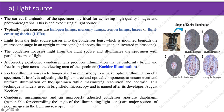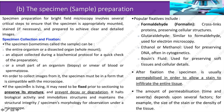Specimen preparation for bright field microscopy involves several critical steps. The specimen can be an entire organism or dissected organ, a whole mount, an aliquot collected during a biochemical protocol, or a small part of an organism such as a biopsy or smear of blood or spermatozoa. The specimen must be in a form compatible with the microscope. If the specimen is living, it may need to be fixed prior to sectioning to preserve its structure and prevent decay.